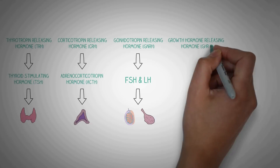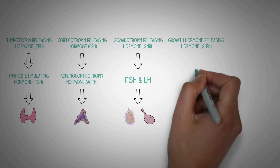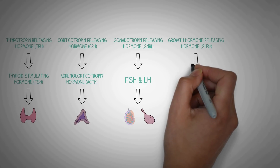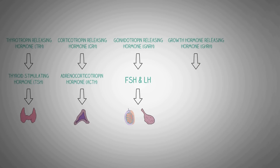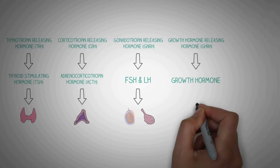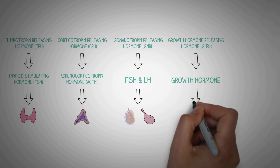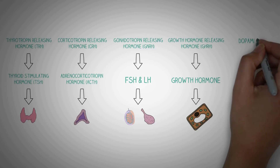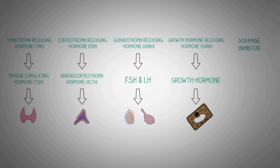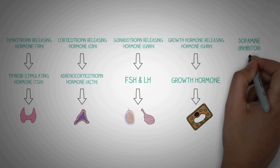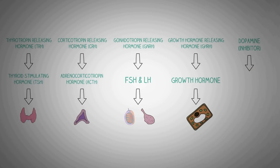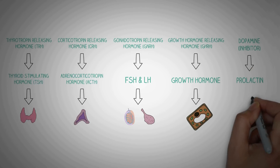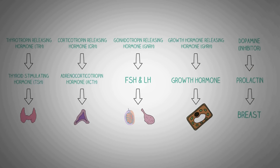The growth hormone-releasing hormone from the hypothalamus causes the release of growth hormone from the pituitary gland, which acts on almost all cells of the body. Dopamine is released from the hypothalamus and inhibits the secretion of prolactin from the pituitary gland. This was a brief overview of the human endocrine system.